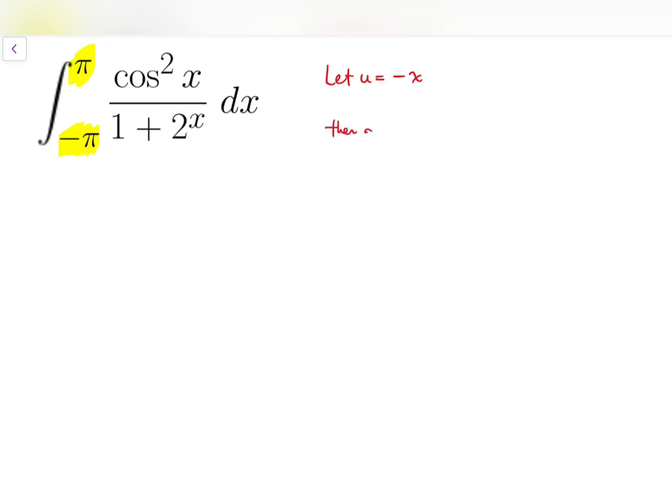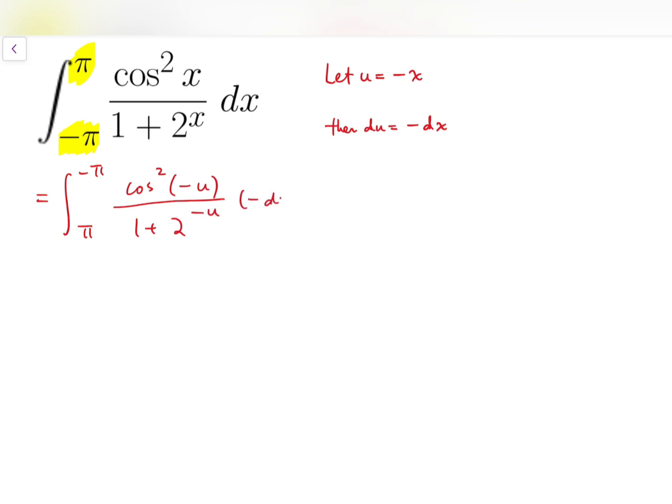Then the differential du is clearly minus dx, and the limits will eventually become from pi to minus pi, so the order is reversed. Now, x is minus u and cosine minus u is still cosine u, so the structure of the top part of the function remains the same. As for the denominator, it becomes 1 plus 2 to the power minus u, and dx equals minus du. It so happens that I can use this minus sign to help reverse the order of the limits and return it back to the way it started.